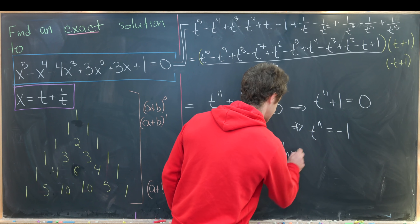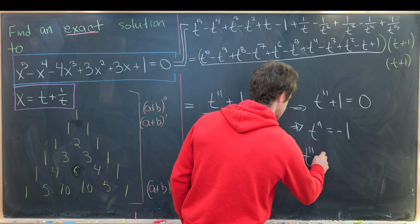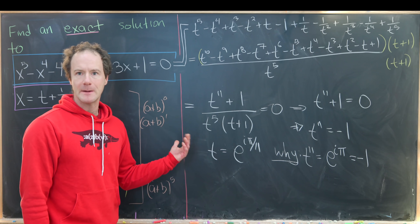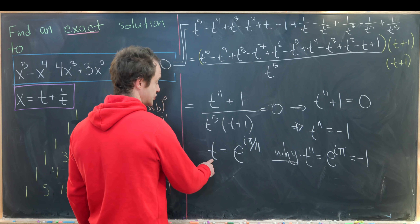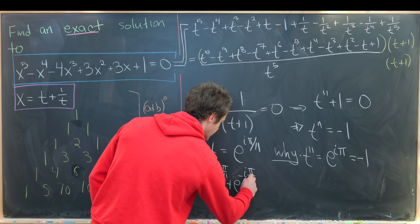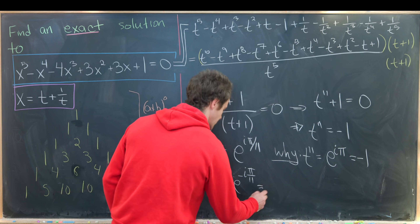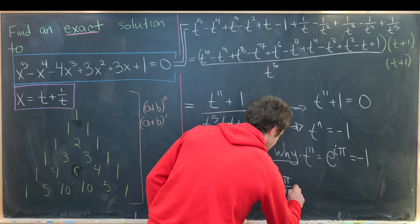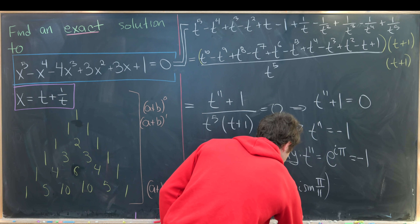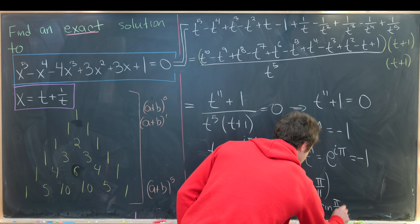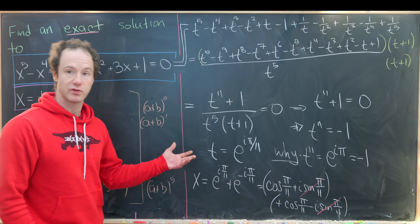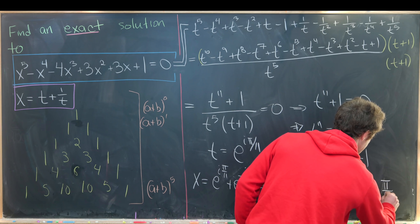Since t to the eleventh equals minus 1, we can set t equal to e to the i times pi over 11. Then t to the eleventh equals e to the i times pi, which by Euler's formula equals minus 1. Since x equals t plus t inverse, we get x equals e to the i pi over 11 plus e to the minus i pi over 11. Expanding each using Euler's formula gives cos(π/11) plus i·sin(π/11) plus cos(π/11) minus i·sin(π/11). The imaginary parts cancel, leaving x equals 2 times cosine of pi over 11.